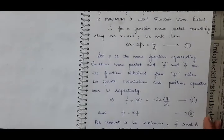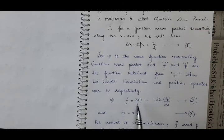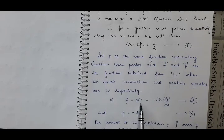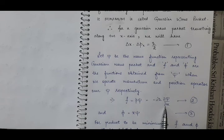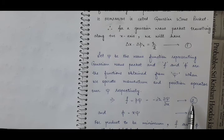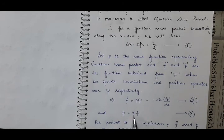So, we have: f is equal to p psi, and the linear momentum operator is equal to minus iota h-bar curly by curly x — we have already studied it. Suppose this as equation 2. And phi is when the position operator is operated over psi. Suppose this as equation 3.